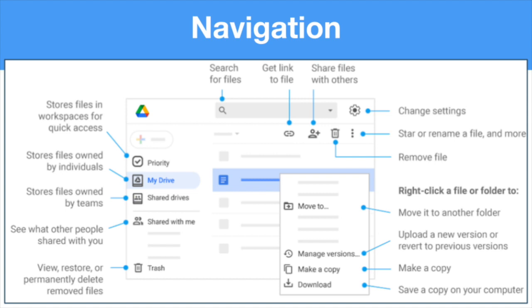Speaking of navigating your Drive, let's look at some of the basic navigation and organization features available. When you access your Drive, you'll see a screen with a menu at the top left. You'll see submenus labeled Priority, My Drive, and Shared Drives. Priority will take you to files grouped together or automatically suggested by Google to create workspaces — collections of documents you frequently use together. My Drive gives you an overview of all files you own, displaying your folders and most recently accessed files.